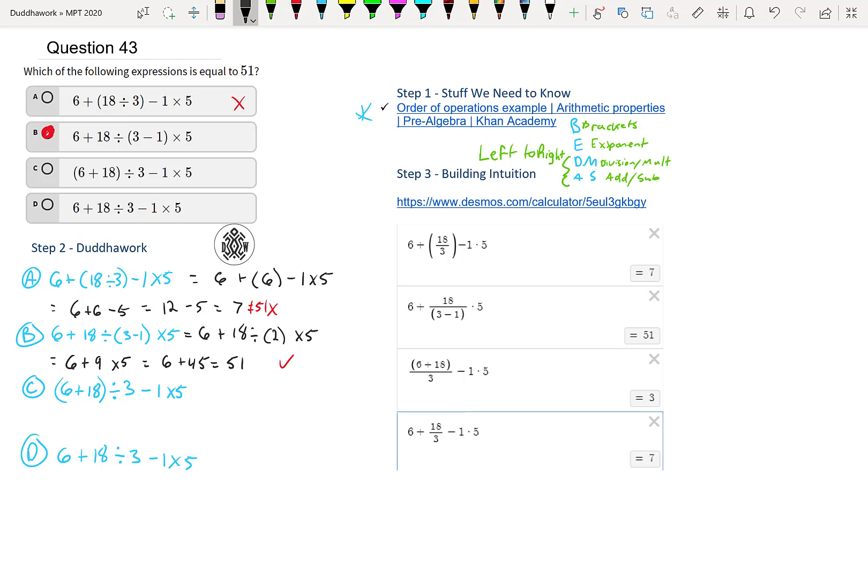So then we move on to C. We have 6 plus 18 in brackets divided by 3 minus 1 times 5. So again, we do the brackets first. That's 6 plus 18, that's 24, divided by 3 minus 1 times 5. So we can do the 24 divided by 3, because that's from left to right. So that's 8 minus 1 times 5. Now we have a subtraction and a multiplication. So we automatically do the multiplication. So that's 8 minus 1 times 5 is 5. 8 minus 5 is 3. So we can tell it is not this one.